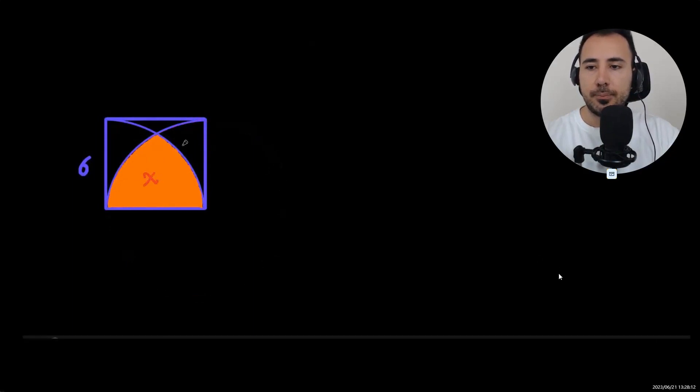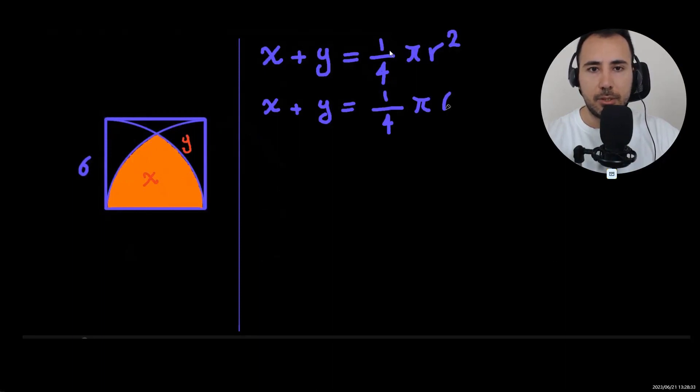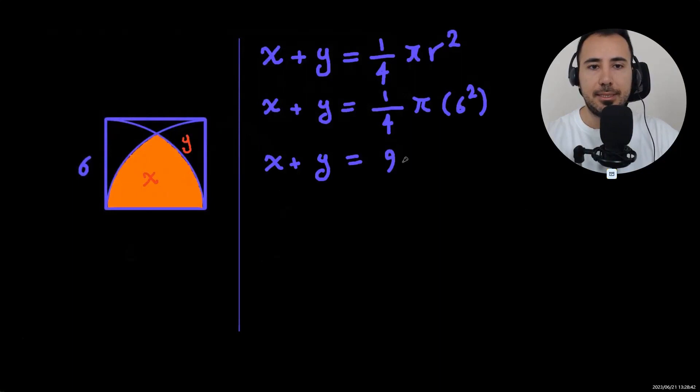To start, the shaded area, let's call that x, and this part will be y. So we see that x plus y is the quarter circle, so that will give us one equation. The area of a circle is pi r squared; because this is a quarter, it gets 1 over 4. We said r is 6, so 6 squared is 36 over 4, which is 9 pi. So x plus y equals 9 pi. That's the first equation.